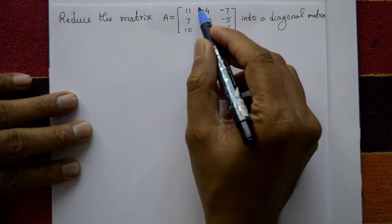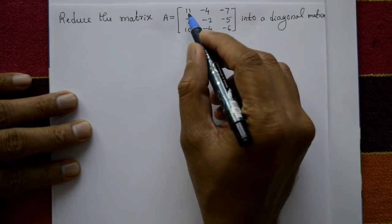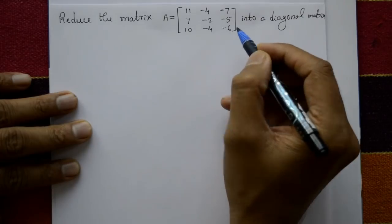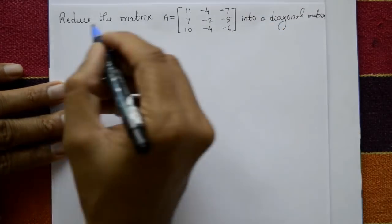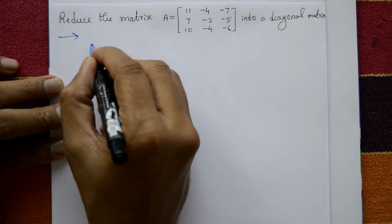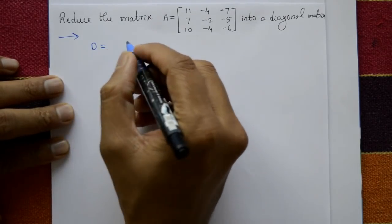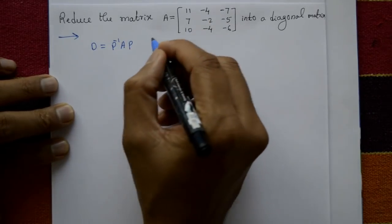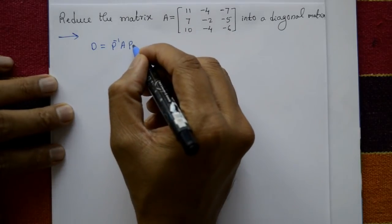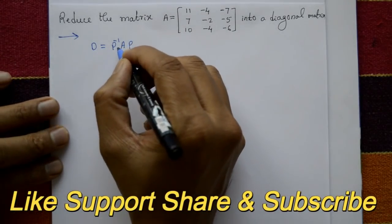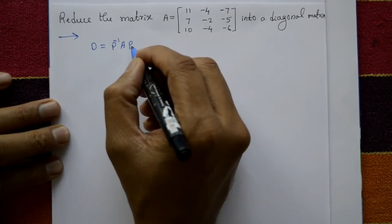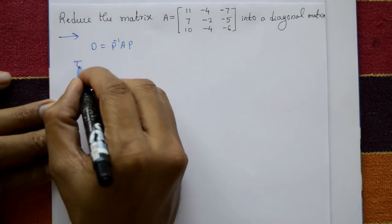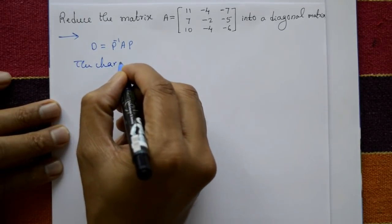Reduce the matrix A, a square matrix 3×3: [11, -4, -7; 7, -2, -5; 10, -4, -6] into a diagonal matrix. The required diagonal matrix D equals inverse of P, times A, times P, where P is the modal matrix. Find the inverse of P, and multiplying all three matrices gives the diagonal matrix.